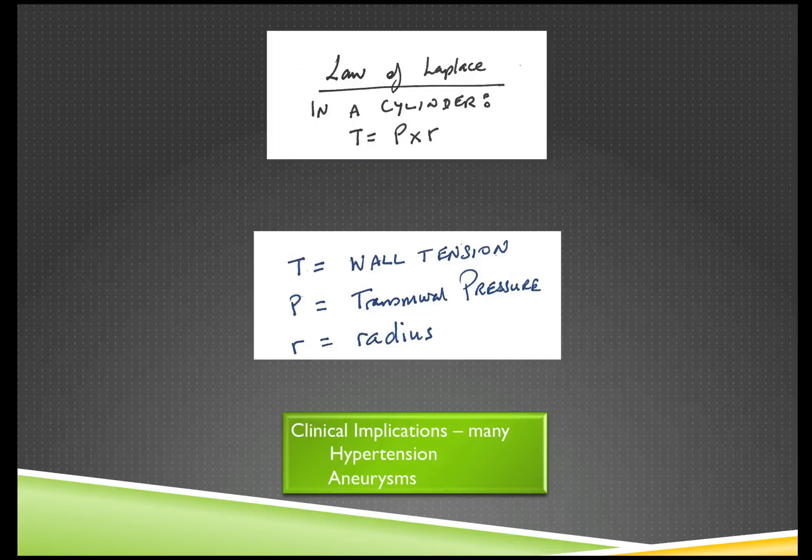The next thing I'd like to talk about in hemodynamics is the Law of Laplace. This assumes that in a cylinder, the wall tension is a function of the transmural pressure and the radius of that vessel. The clinical implications would be that in someone who has hypertension, as the pressure rises there's a significant increase in the wall tension. Similarly, in patients with aneurysm, such as a pathological dilatation of a blood vessel, as the radius increases the wall tension rises significantly.